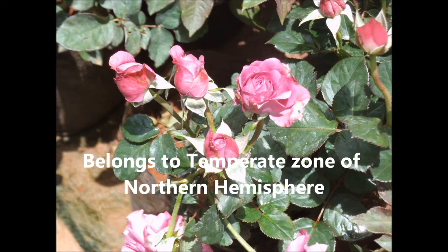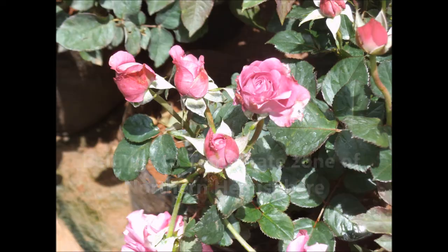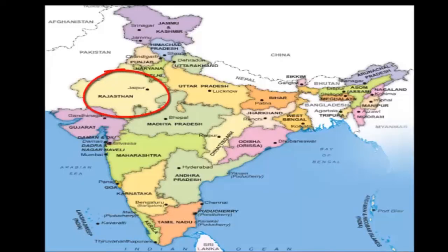or tetraploid. Roses naturally belong to the cool region of the temperate zone of the northern hemisphere. In India, the major areas under commercial rose cultivation include Harda, Gartha in Rajasthan, Aligarh, Kannauj, Ghazipur, Ballia, and Jaunpur in Uttar Pradesh.